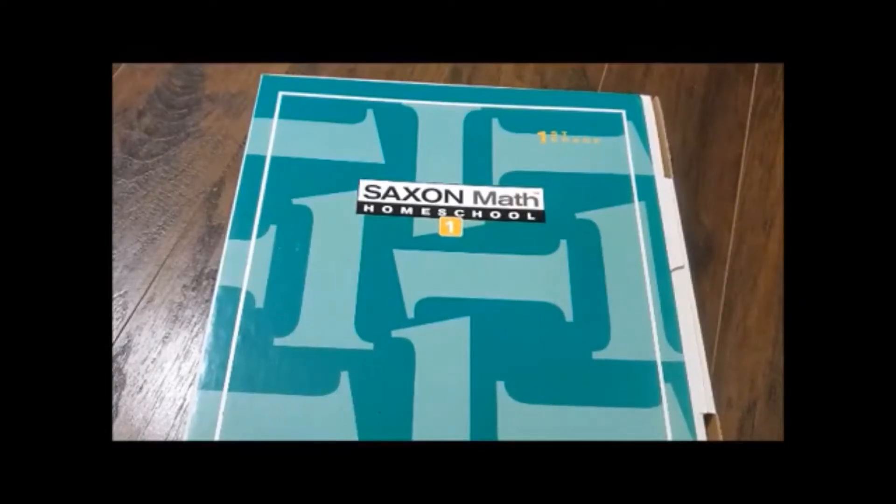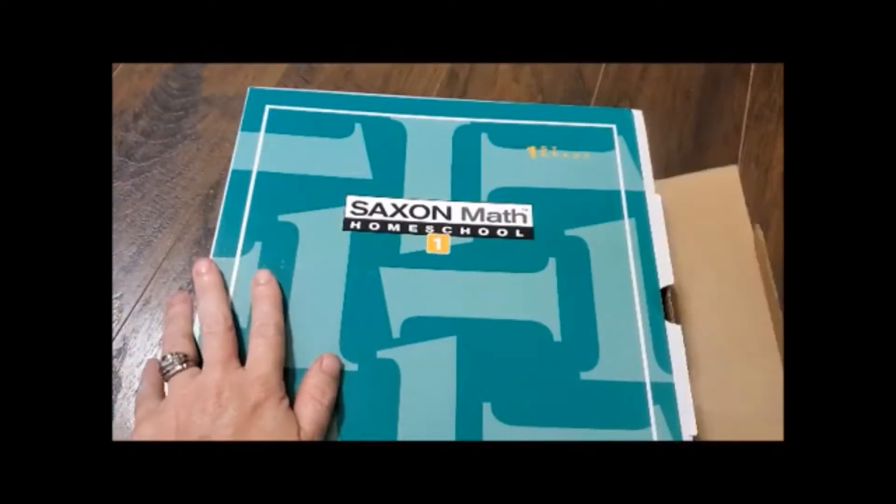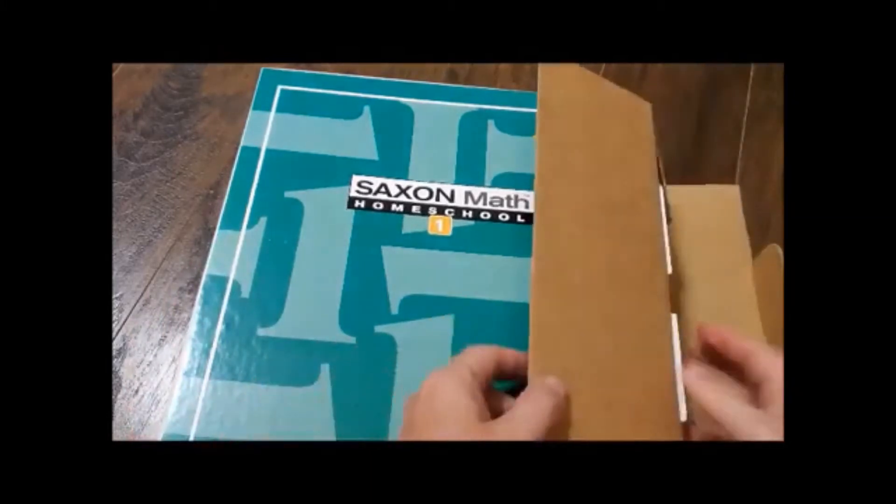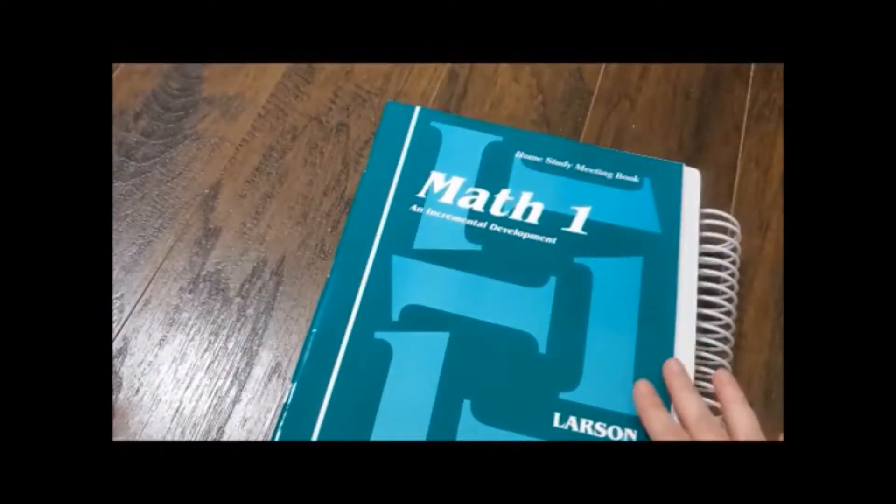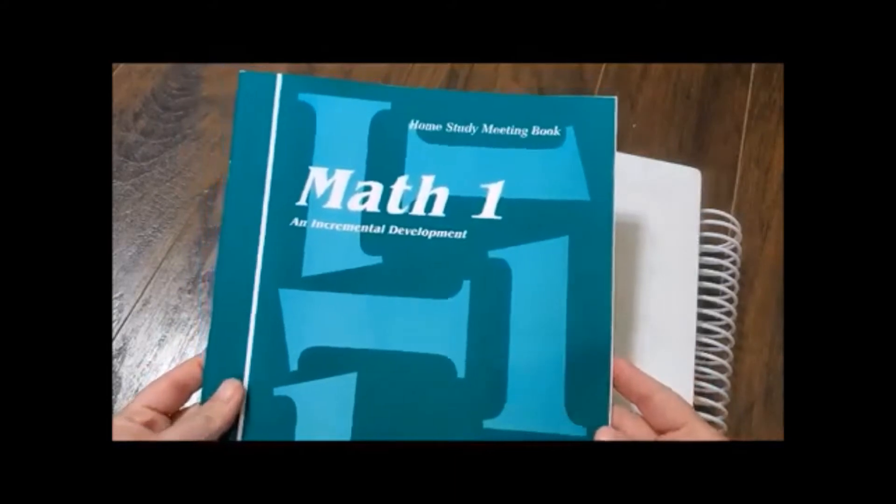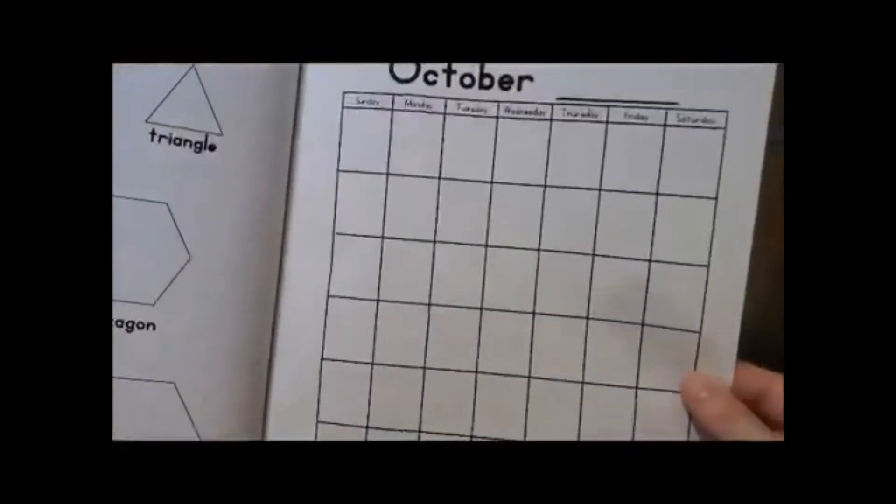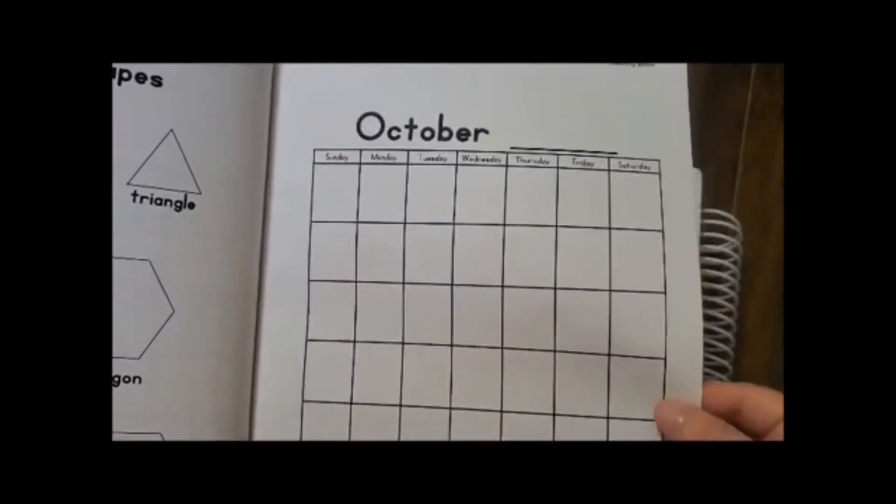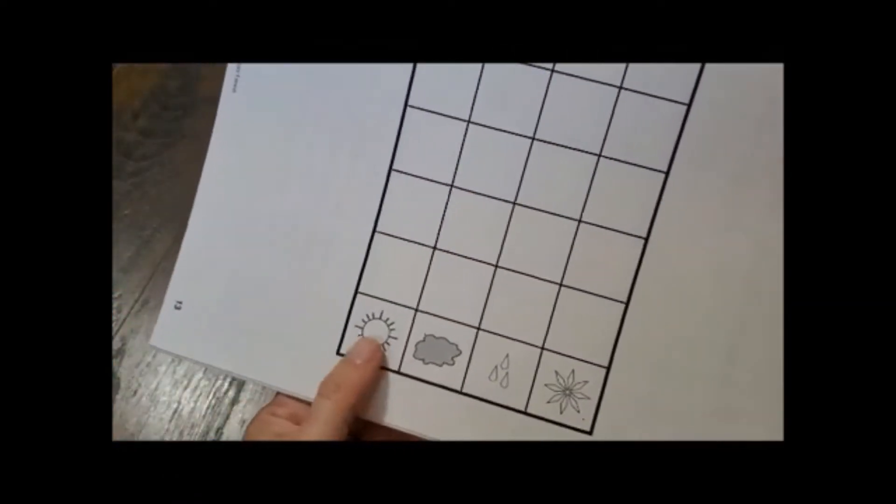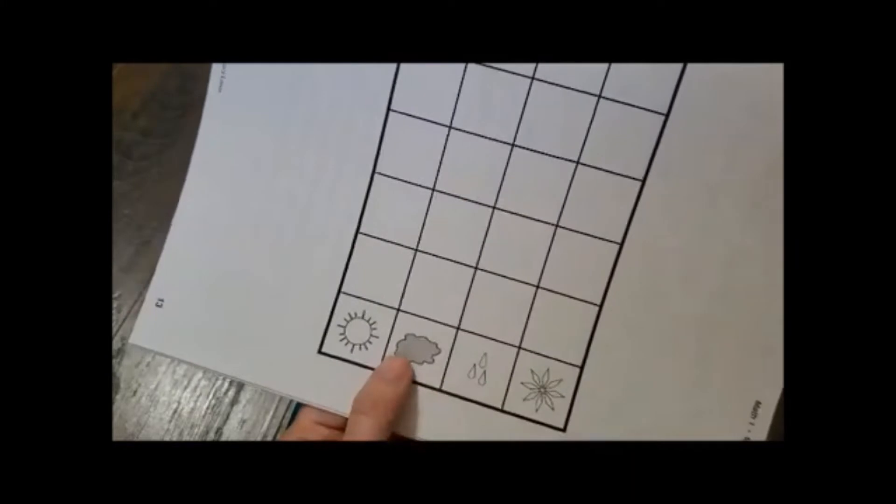Okay here is the flip through of Saxon Math Homeschool Level 1, first grade. It comes in a nice big box for you. Alright so you have right here this is called your meeting book and basically every morning you work on your calendar skills. These are the shapes you are going to work on for the month. And there is the calendar.